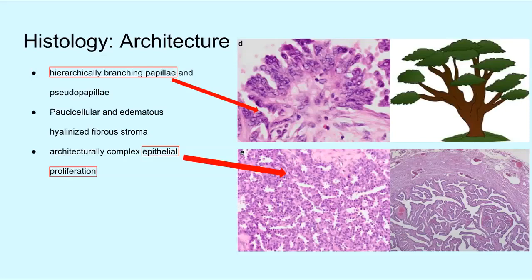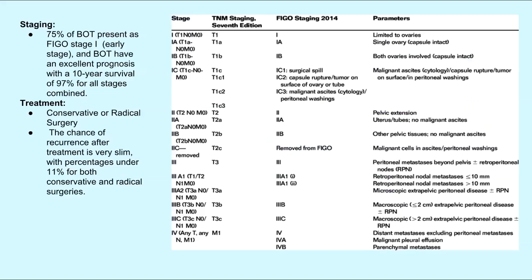In the bottom left photo, the epithelial cells can be seen here and they resemble the cells of the fallopian tube. In the bottom right photo, the cells have mild to moderate nuclear atypia with hyperchromasia or darkened nuclei, and many layers of epithelial cells.